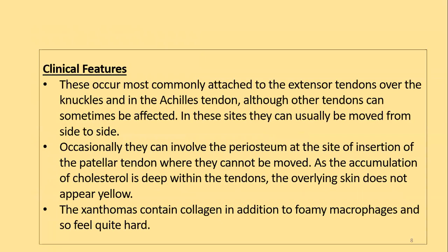Tendinous xanthomas occur most commonly attached to extensor tendons, mainly over the knuckles and the Achilles tendon, though other tendons can sometimes be affected. They can be moved from side to side because they are attached to the tendon and not to the bone. Occasionally they can involve the periosteum at the site of insertion of the patellar tendon, where they cannot be moved. The overlying skin usually does not give a yellowish tinge.